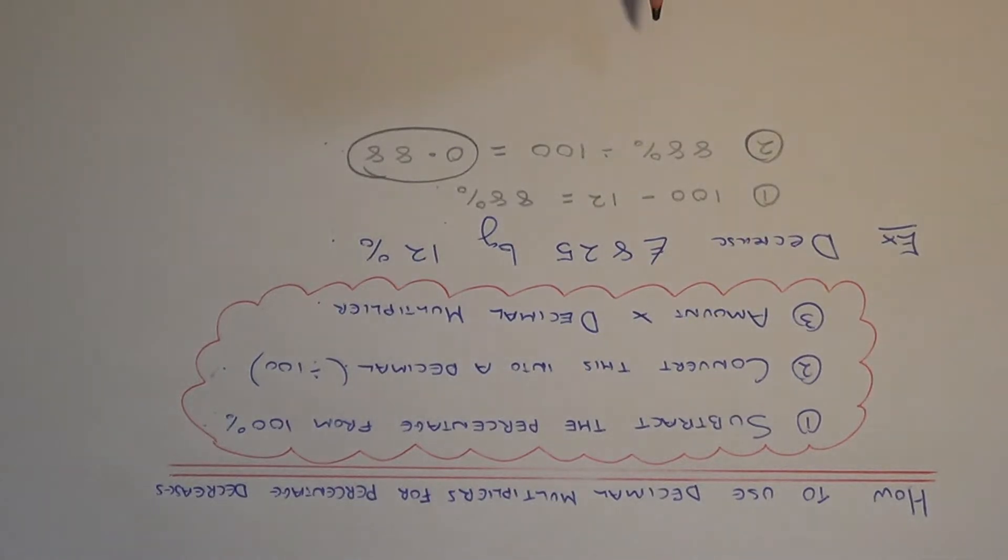This is the important number when it comes to decreasing amounts by percentages. And then the third step is you multiply the amount of money by this decimal multiplier. So we do 825 multiplied by 0.88.